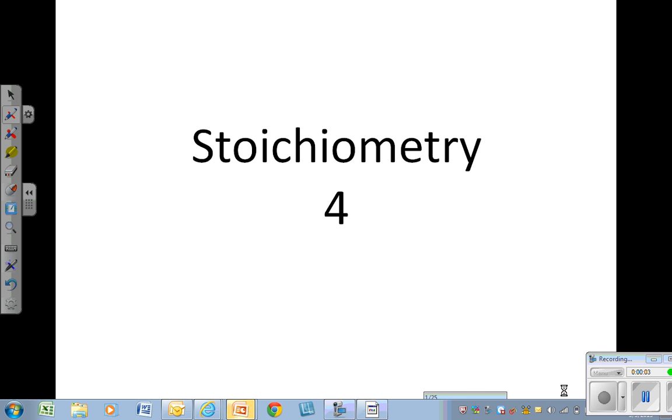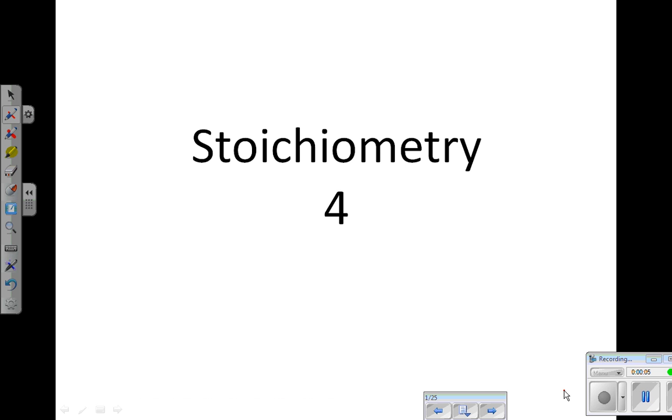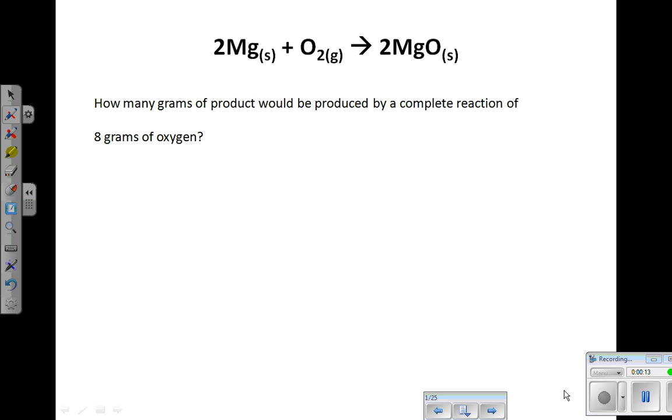This is the fourth in our series of stoichiometry videos where we are using a balanced equation to come up with quantitative results of either products or reactants. We're going to stick with the same balanced equation, which is two moles of magnesium solid react with one mole of oxygen gas to produce two moles of magnesium oxide solid.